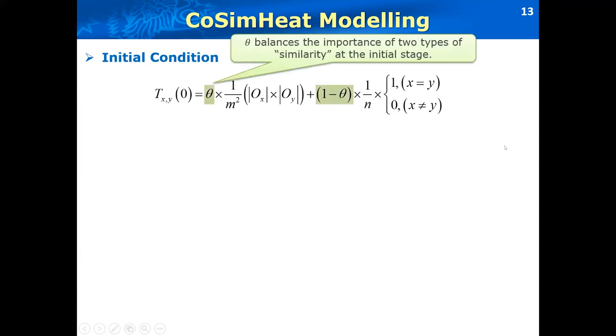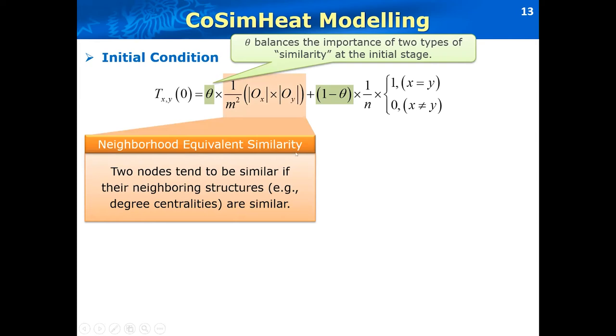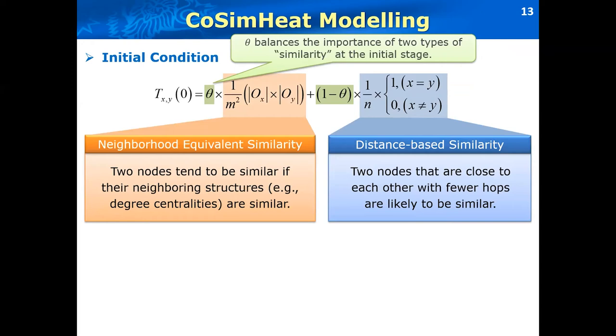So this is our initial condition, which consists of two parts. We introduce a hyperparameter theta, which balances the importance of the two types of similarity at the initial stage, where theta is a constant vector user specified between zero and one. Well, the first part of similarity is the neighborhood-based equivalent similarity, which is based on the intuition that two nodes tend to be similar if they are neighboring structures. For example, the in-degree centralities are similar. And the second type of similarity is called distance-based similarity, which is based on the intuition that two nodes that are close to each other with fewer hops are likely to be similar.